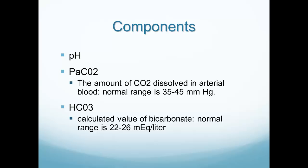To determine a patient's acid-base balance using arterial blood gases, we look at three main components. First, the pH — normal range is 7.35 to 7.45. Second, the PaCO2, which is the amount of CO2 dissolved in the blood — normal value is 35 to 45. You can remember this as the last two numbers of the pH range. Third, the bicarb — normal range is 22 to 26. These three components are what we analyze in a blood gas.